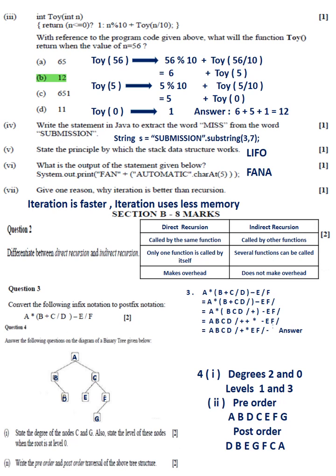Question 2: Direct recursion is called by the same function. Indirect recursion is called by other functions. Direct recursion has only one function calling itself; indirect recursion can involve several functions. Direct recursion makes overhead; indirect recursion does not make overhead.